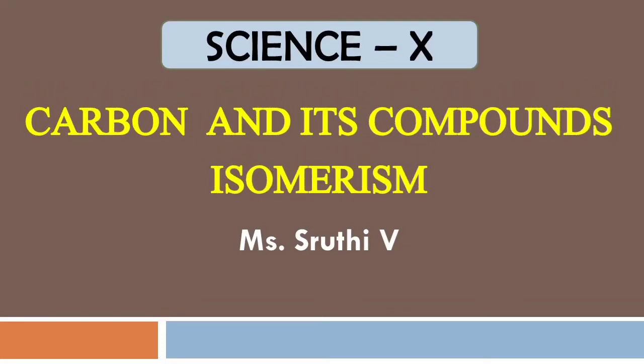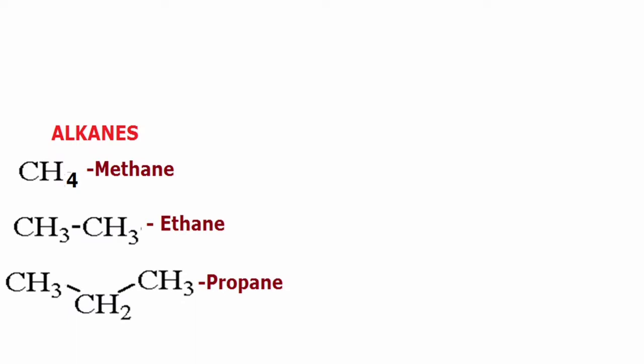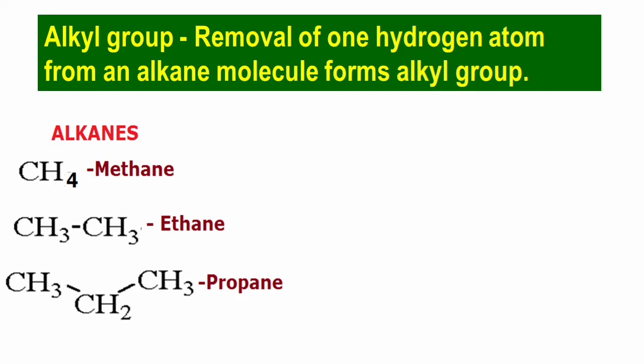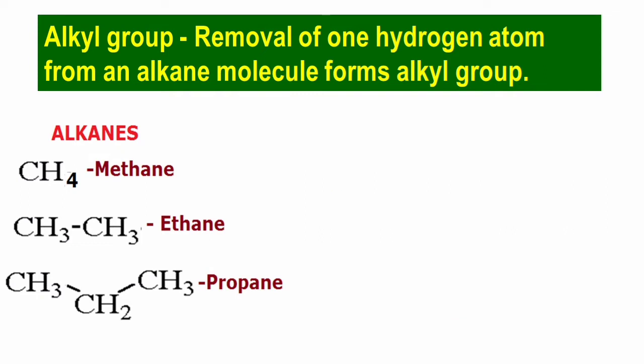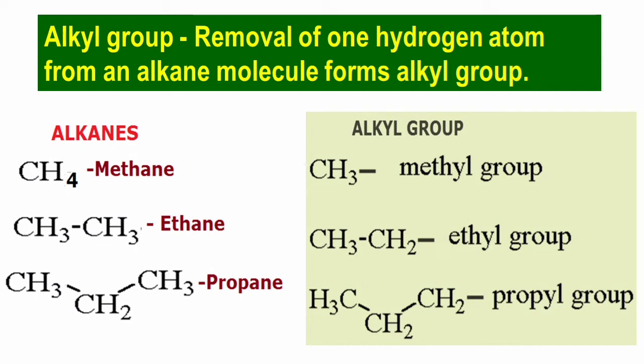Carbon and its compounds: isomerism in carbon compounds. You are now thorough with the formation of alkanes and their formula. Here are the first three members of the alkane family: CH4 methane, CH3CH3 ethane, and CH3CH2CH3 propane. If one hydrogen atom is removed from a molecule it becomes an alkyl group. For example, removing one hydrogen from methane gives the methyl group (CH3). The names of alkyl group members end with 'yl', so methane becomes methyl, ethane becomes ethyl, and propane becomes propyl.